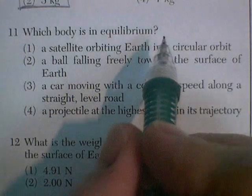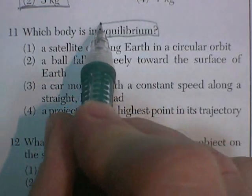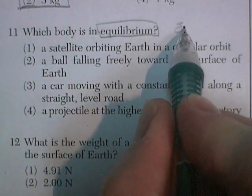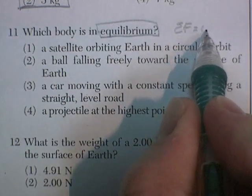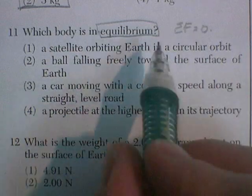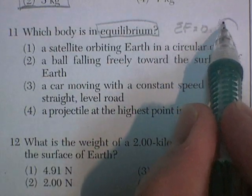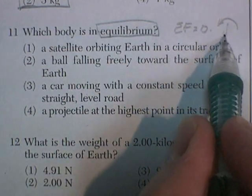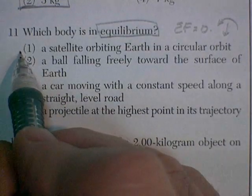Question 11. Which body is in equilibrium? Equilibrium means that the sum of the forces acting on it is equal to zero. There's no additional forces. A satellite orbiting the Earth, that's constantly changing its direction. It requires a constant force. That's not equilibrium.